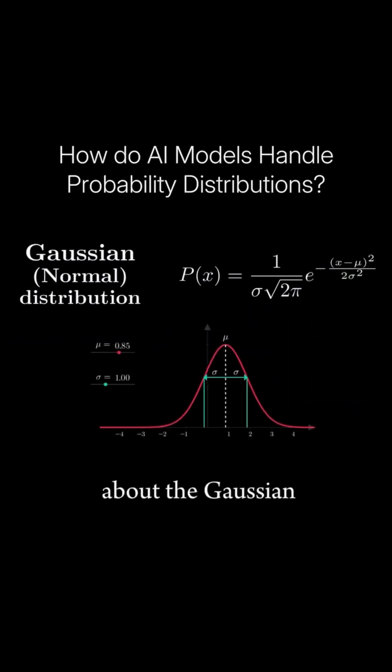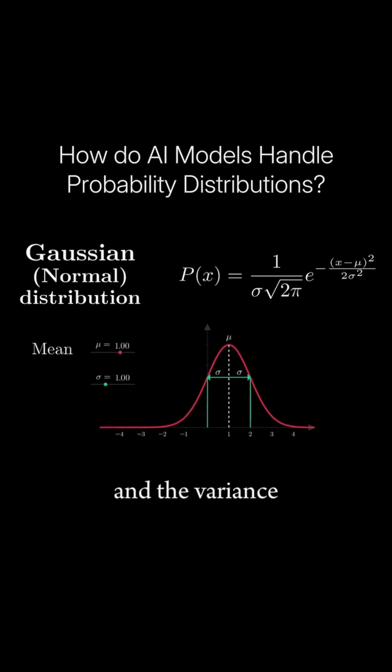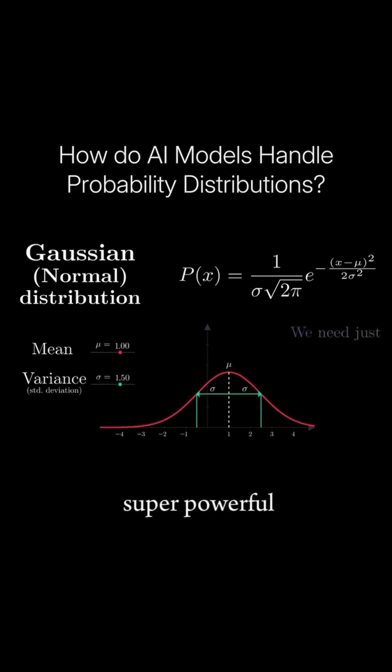What is remarkable about the Gaussian is that we can fully specify any normal distribution using just two parameters: the mean mu, where the center of the bell curve is, and the variance sigma, how spread out it is. This efficiency is super powerful.